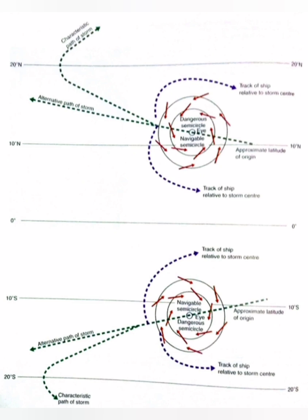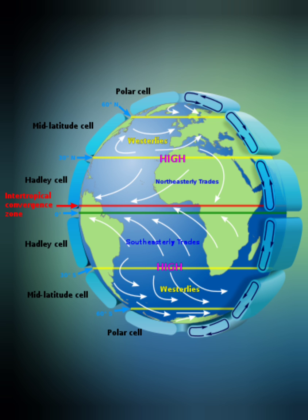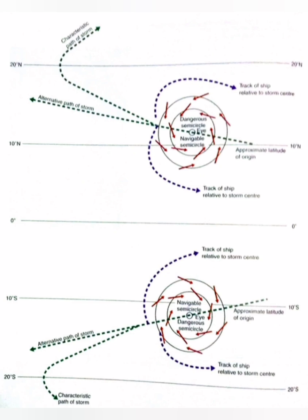the cyclone usually starts and then moves towards the west with a slight component towards the poles, and then all of a sudden it starts to move east. The first movement is very simple to understand — once the cyclone has formed, there are easterly winds in that area, the easterly trade winds, and as a result the cyclone has started moving westwards.